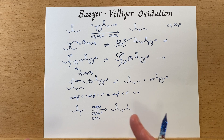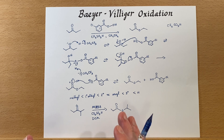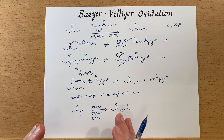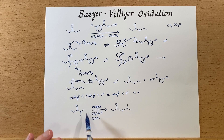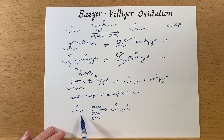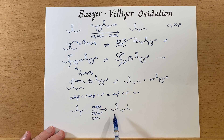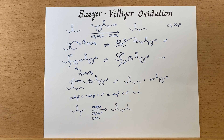So this has been the Baeyer-Villiger oxidation. You can see what happens with an asymmetrical ketone, and you can also see the full mechanism.